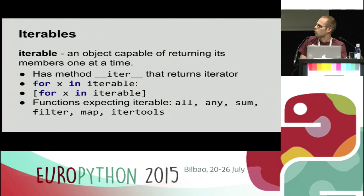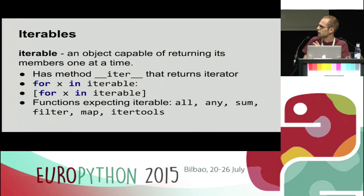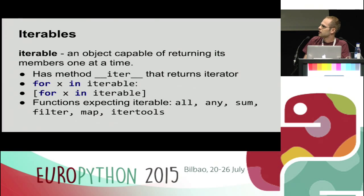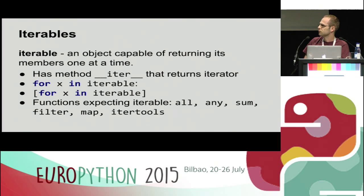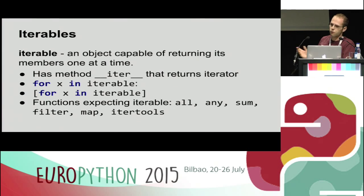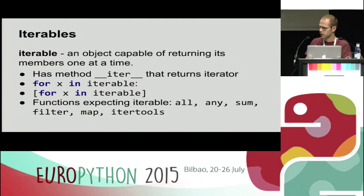What is an iterable in Python? All the definitions I took from the official glossary, which uses pretty vague, abstract definitions. Practically, an iterable is an object that has an __iter__ method. Where can it be used? It can be used in a for statement in a loop, in list comprehensions or generator expressions, or you can pass it to functions that expect an iterable, like all, any, filter, and so on.